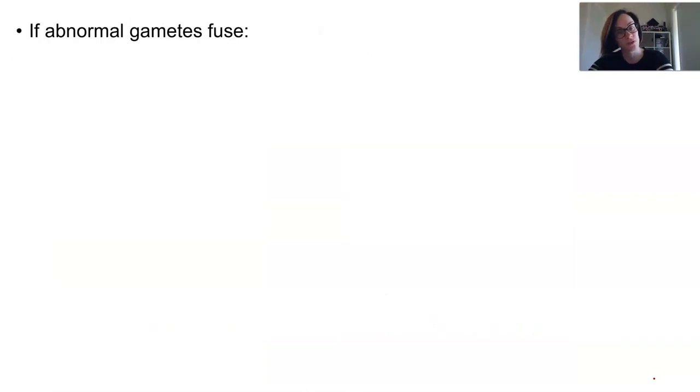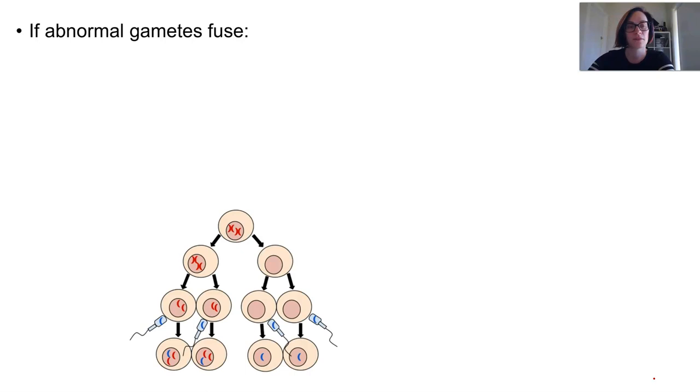If these gametes go on to fuse at fertilization, we end up with one of two scenarios. First, we can have a gamete with two copies of a chromosome fusing with another with one copy already. That leads to three copies of the same chromosome, and this is known as trisomy.